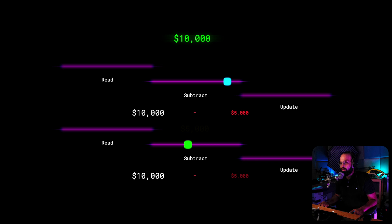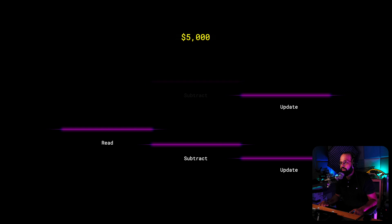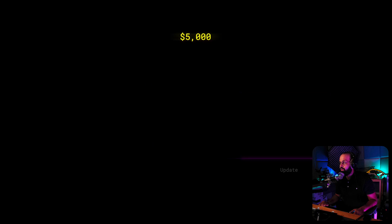It updates to five thousand dollars as a result. Obviously this is wrong — the end result should be zero left in the wallet, but because of the race condition the result of the computation is incorrect.